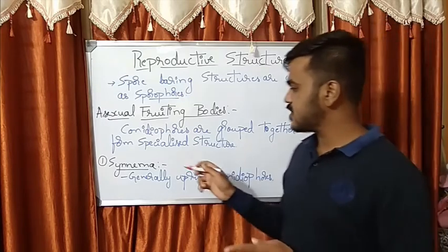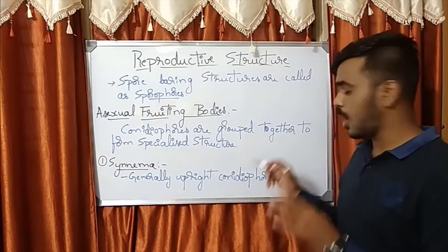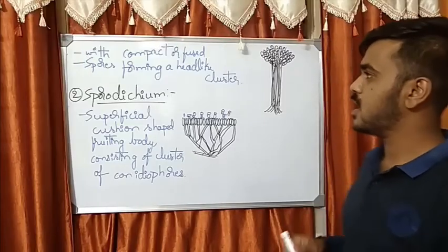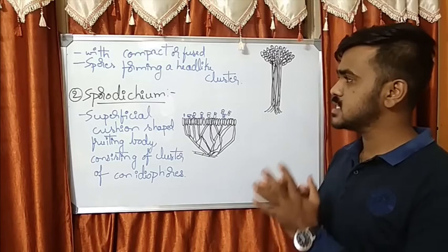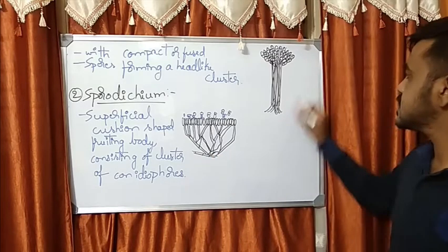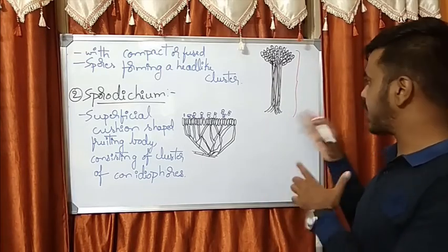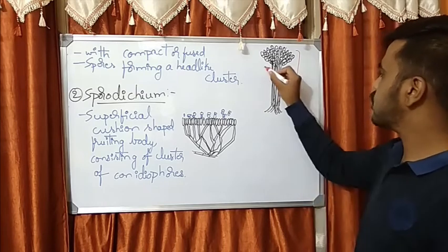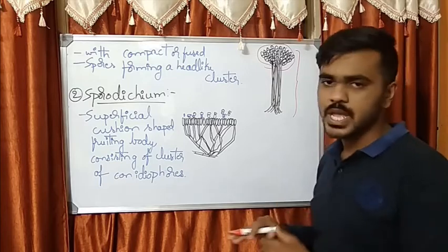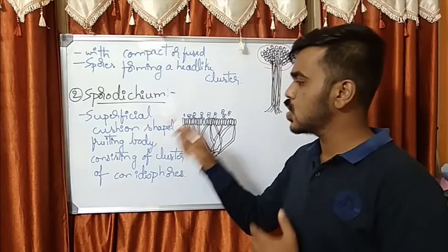Beginning with the synnema — the synnema is an upright conidiophore. These synnemata are compact or fused, and the spores are forming head-like structures. Looking at the typical image of the synnema, these are upright conidiophores and spores will be forming a head-like structure. Next comes the sporodochium, which is a superficial cushion-shaped fruiting body.